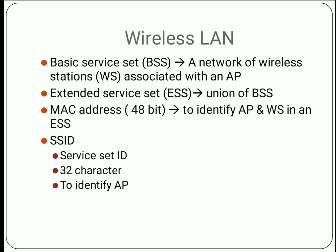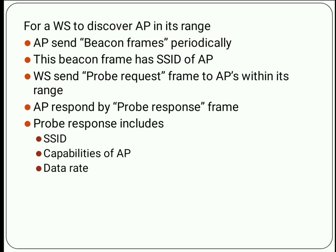A basic service set includes various wireless stations connected with an access point. A union of BSSs can be called an ESS. The whole figure can be considered an ESS — an extended service set — which includes two basic service sets, each containing wireless stations and an access point. Identification of AP and wireless station in an ESS is done by a MAC address, a 48-bit address. An access point can also be identified by SSID, that is service set ID, which is a 32-character value.